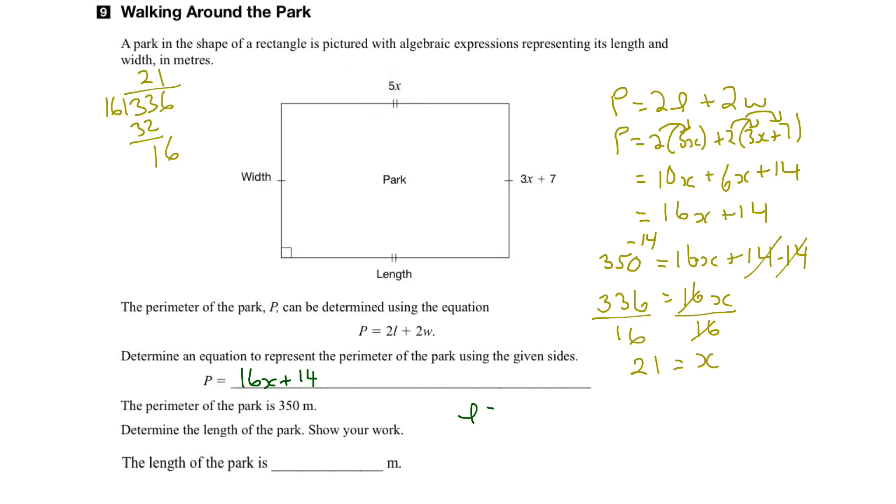So we can say that length equals 5x, and then we can substitute our value for x into this equation. So x is 21, we'll stick it in here. So length is equal to 5 times 21, and 5 times 21 will be 105.